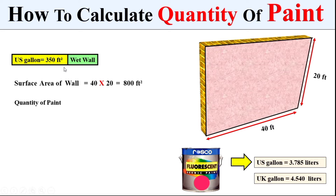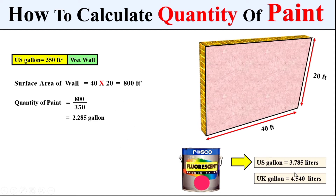To calculate the total quantity of paint, we divide the total surface area of the wall by 350 — the area covered by one US gallon. This gives us the total quantity of paint in terms of US gallons. If we want to convert to liters, we multiply by 3.785, since one US gallon equals 3.785 liters.